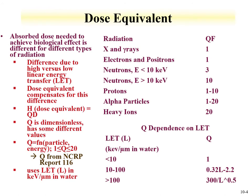The dose equivalent takes the absorbed dose and normalizes it to different types of radiation. As we saw, charged particles, electrons, and photons behave differently with matter, and this influence should be described when it comes to biological effect. The difference is driven by linear energy transfer. Dose equivalence equals dose D times Q, where Q is a dimensionless value often a function of the particle and the energy.